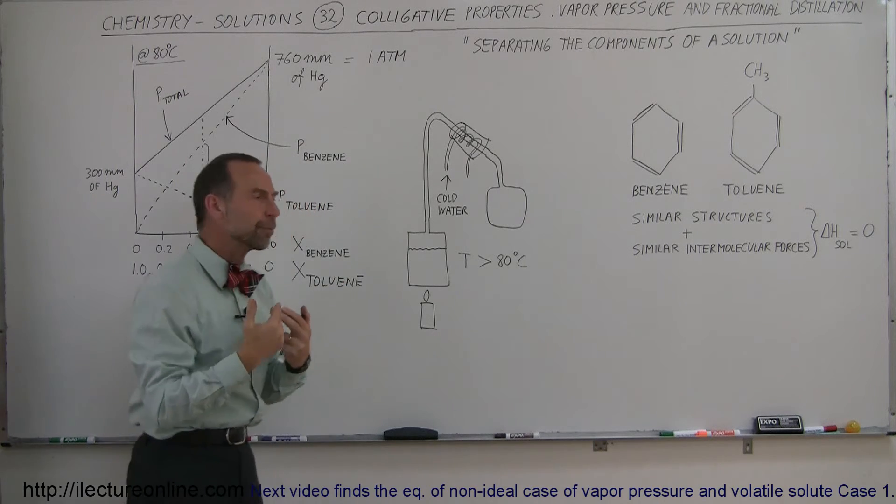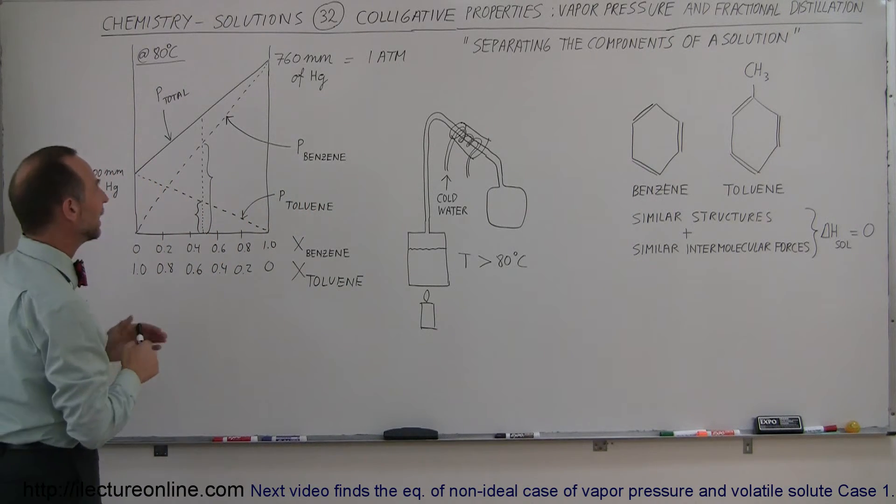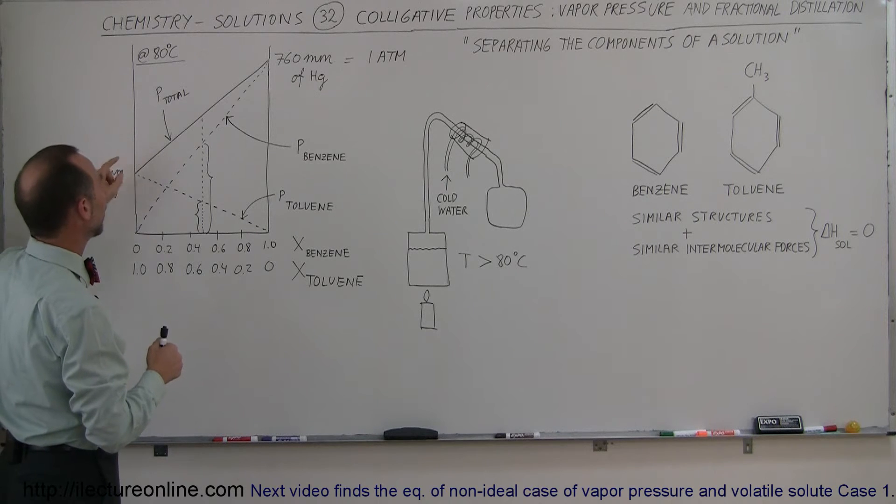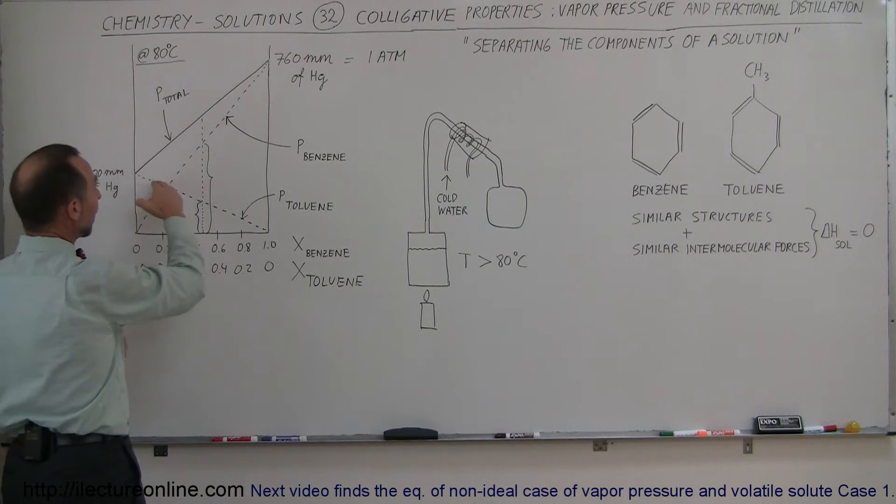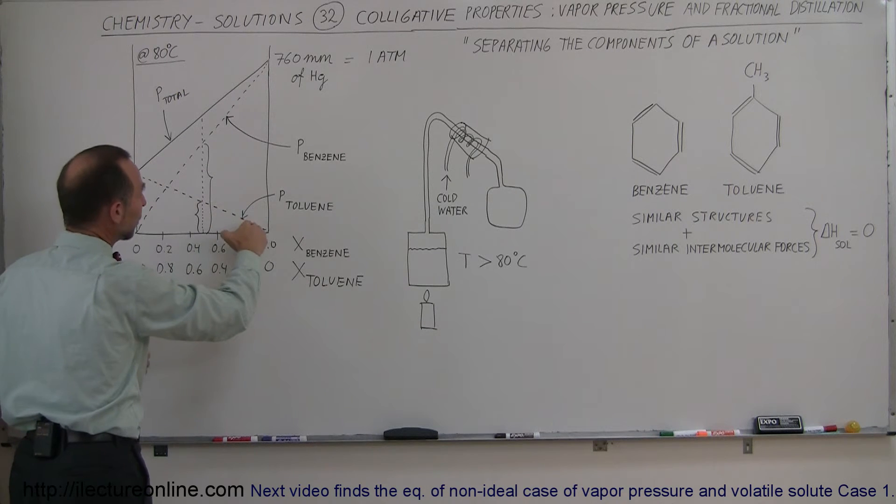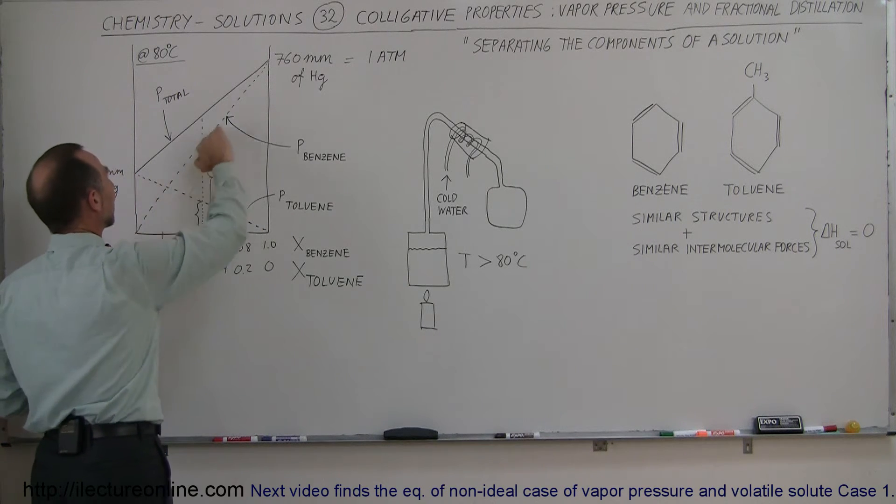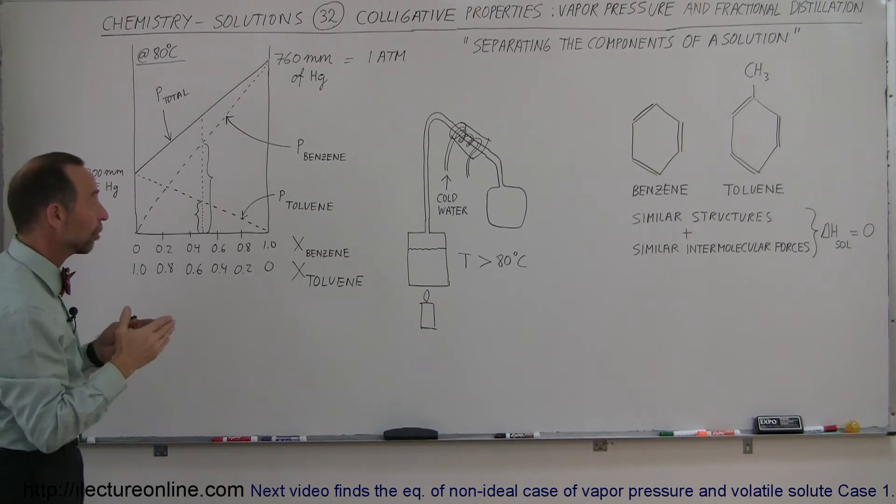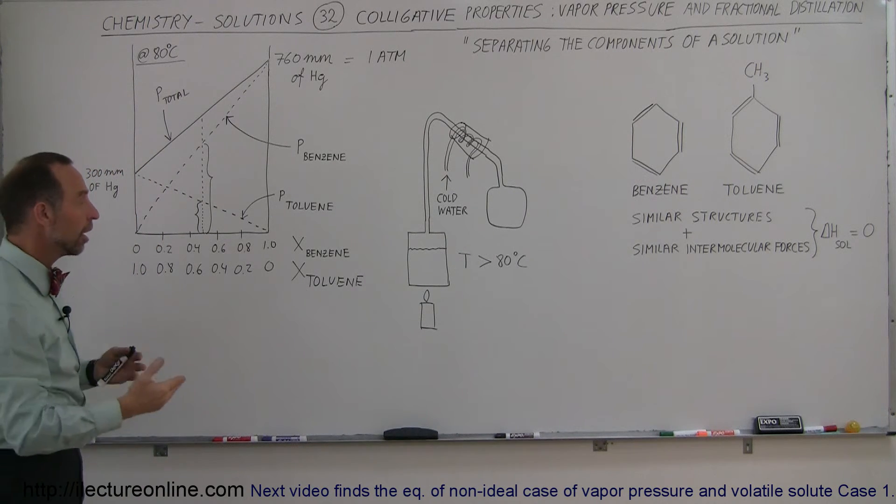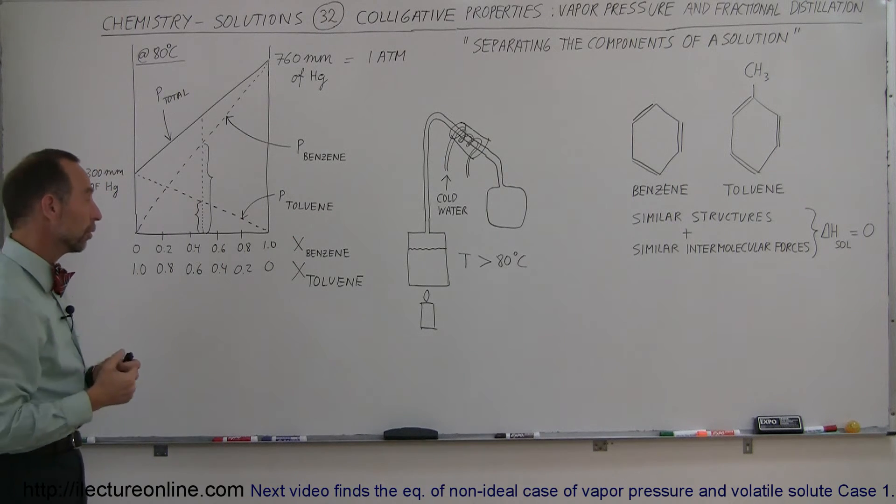the vapor pressure from a solution like that is simply a sum of the vapor pressures of the individual components. This line here represents the vapor pressure of toluene. This line here represents the vapor pressure of benzene. The vapor pressures are a function of the molar fraction of each of the two components.